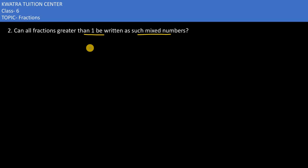Greater than 1, so if we talk about greater than 1, the number can be 3 by 2. 3 by 2 is greater than 1. 5 by 2 is greater than 1. Now we can see if they are mixed fractions or not.